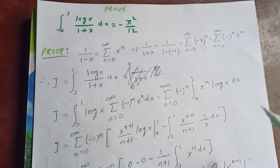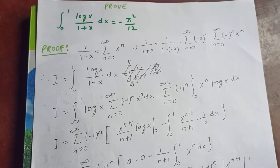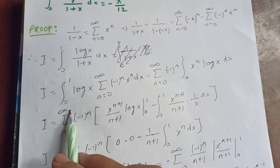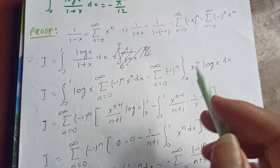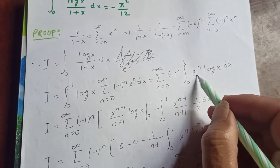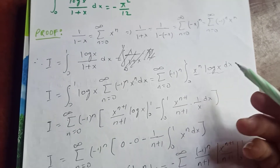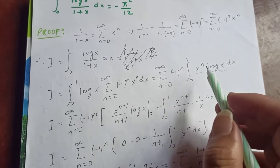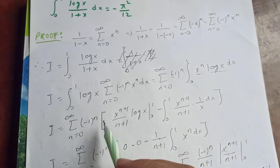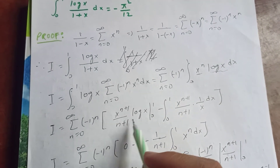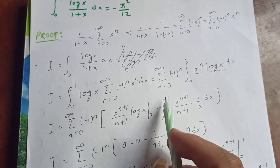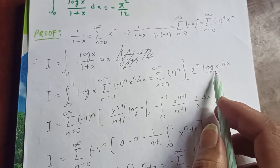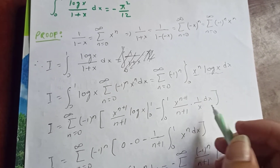We apply integration by parts, treating log(x) as the first function and x^n as the second function. So I equals the sum from n equal to 0 to infinity of (−1)^n, times log(x) · x^(n+1)/(n+1) evaluated from 0 to 1, minus the integral from 0 to 1 of x^(n+1)/(n+1) times (1/x) dx.